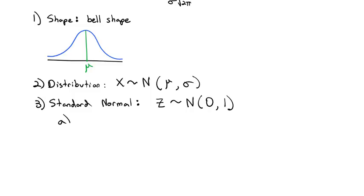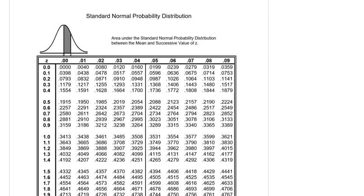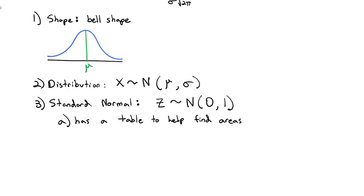What's nice about the standard normal distribution is it has a table to help us find areas. This is what the table looks like. The table gives us values for z. Going down the first column you see the first two digits, for example 1.2, and then if I wanted 1.23, I'd go to the 3 on the next column. Where those two overlap, at 0.3907, I can get my area under the curve based on those z values.